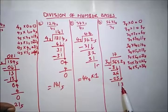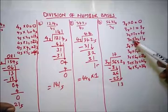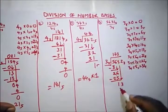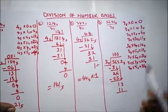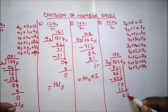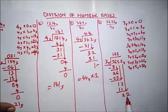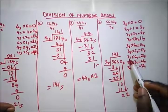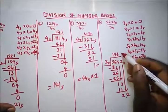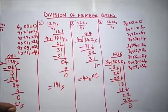3 into 13 base 8: 3 times 3 is 11 base 8, and 3 times 4 is 14 base 8, which is greater than 13. So it goes 3 times. Write 3. Subtract 11 from 13 base 8, giving remainder 2. Bring down 2, giving 22 base 8. From our table, 3 times 6 in base 8 is 22 base 8. So it goes 6 times. Subtract to get 0. Our answer is 1736 base 8.